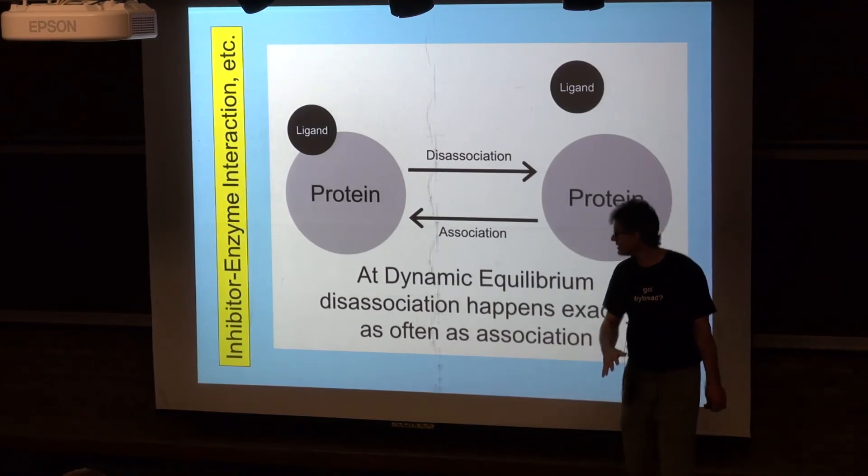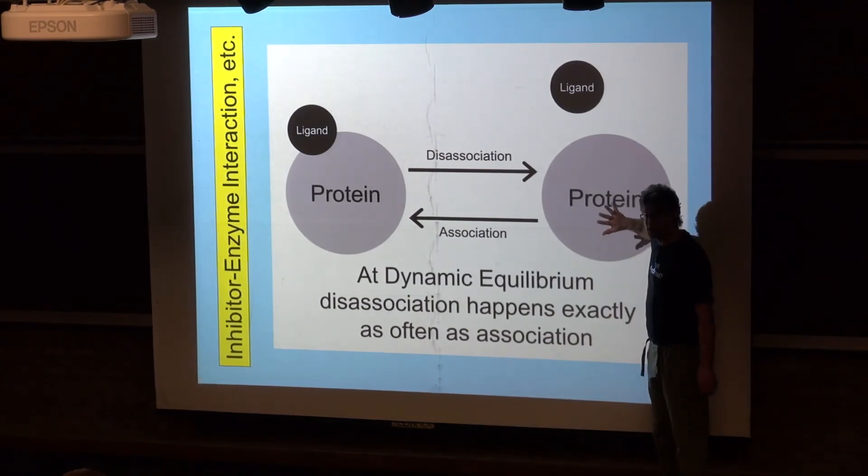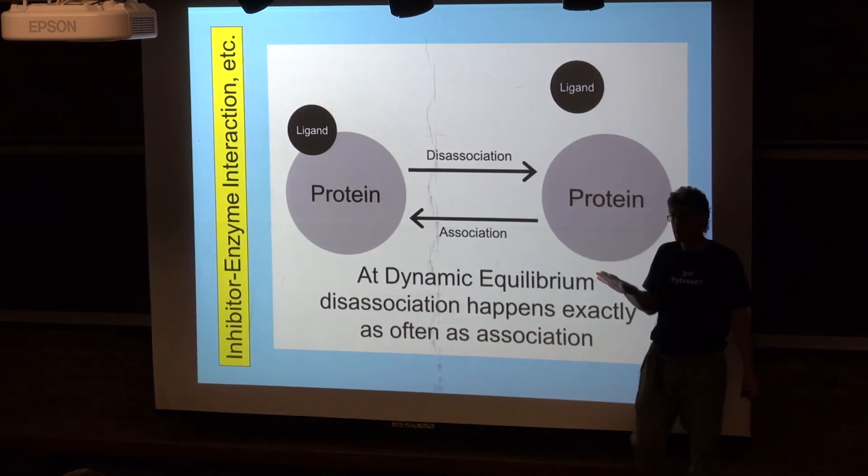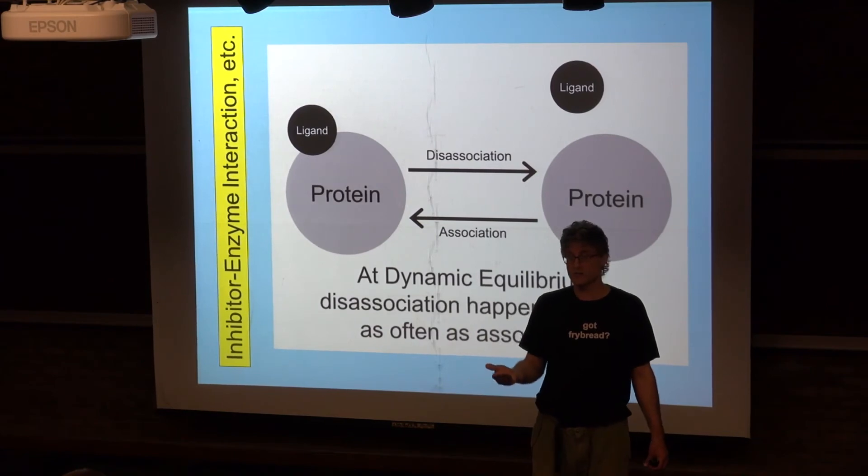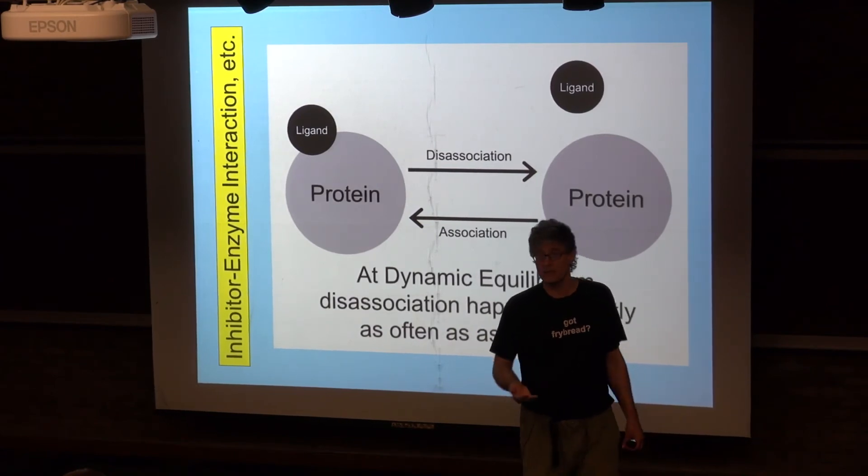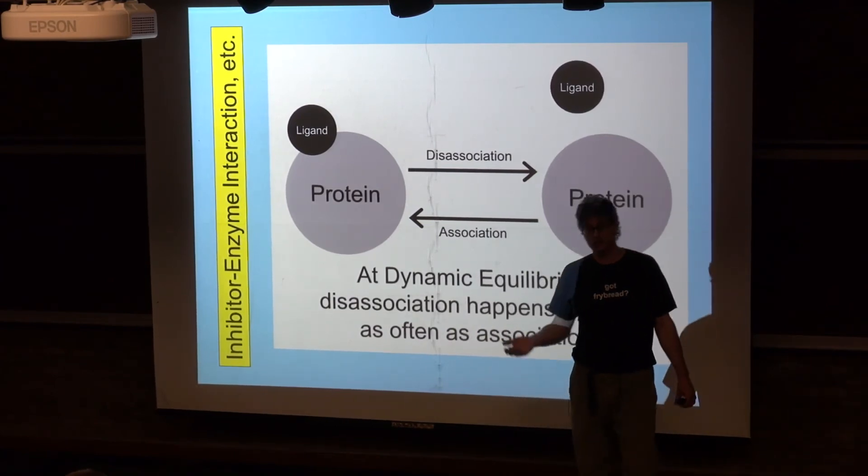That means the protein, by and large, is going to have ligand bound rather than not bound, and that means whatever the ligand does is going to be happening. So if the ligand is an allosteric inhibitor, the protein is going to tend to not be functional.